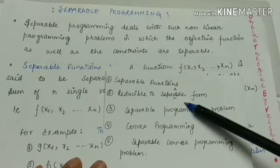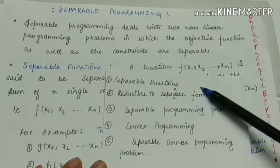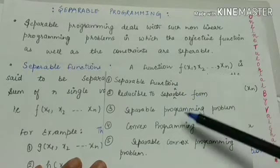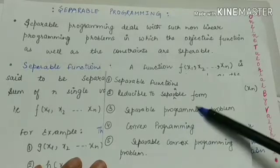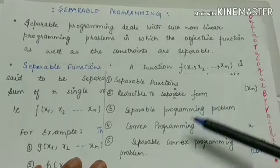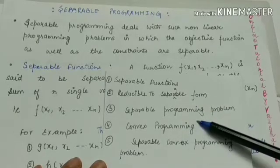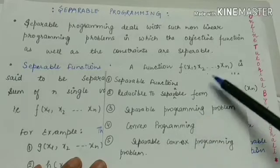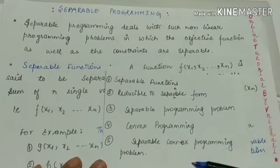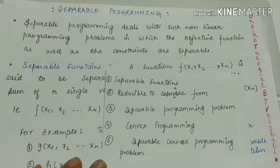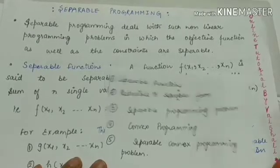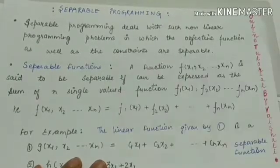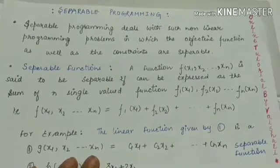I'll be discussing the following five topics: two-variable functions reducible to separable form, separable programming problem, convex programming, and separable convex programming problem. We will discuss each of these today with their definitions and examples.